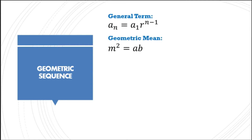For the geometric mean, we have: m squared equals a multiplied by b. We only use this formula if we need to insert one geometric mean. If not, we need to identify the value of the common ratio first in order to get the geometric means.